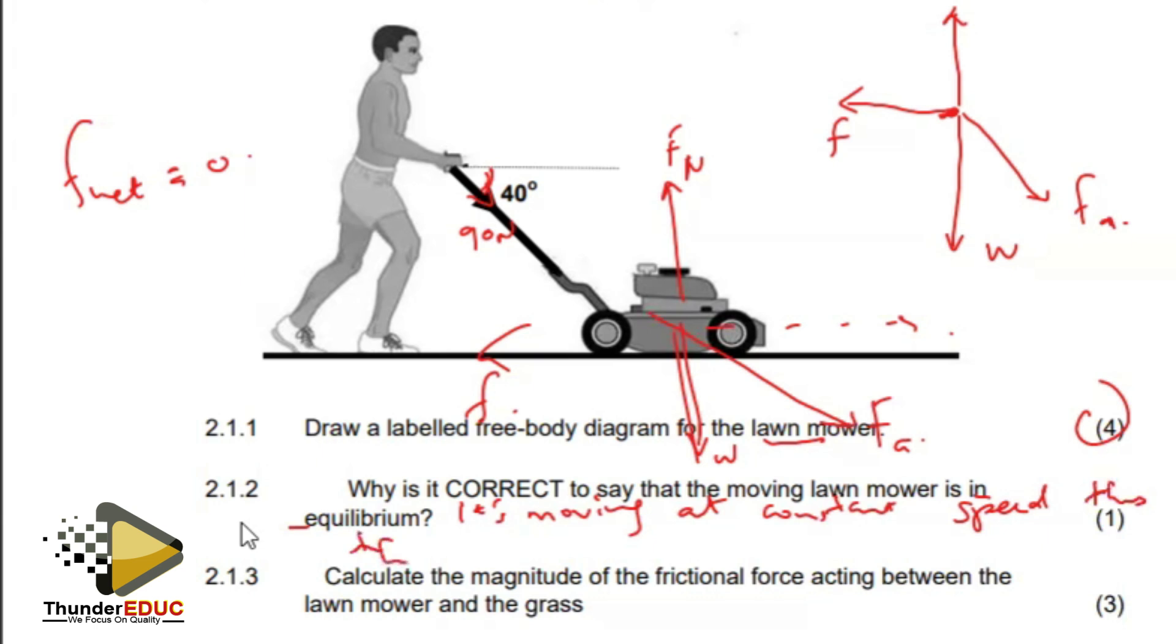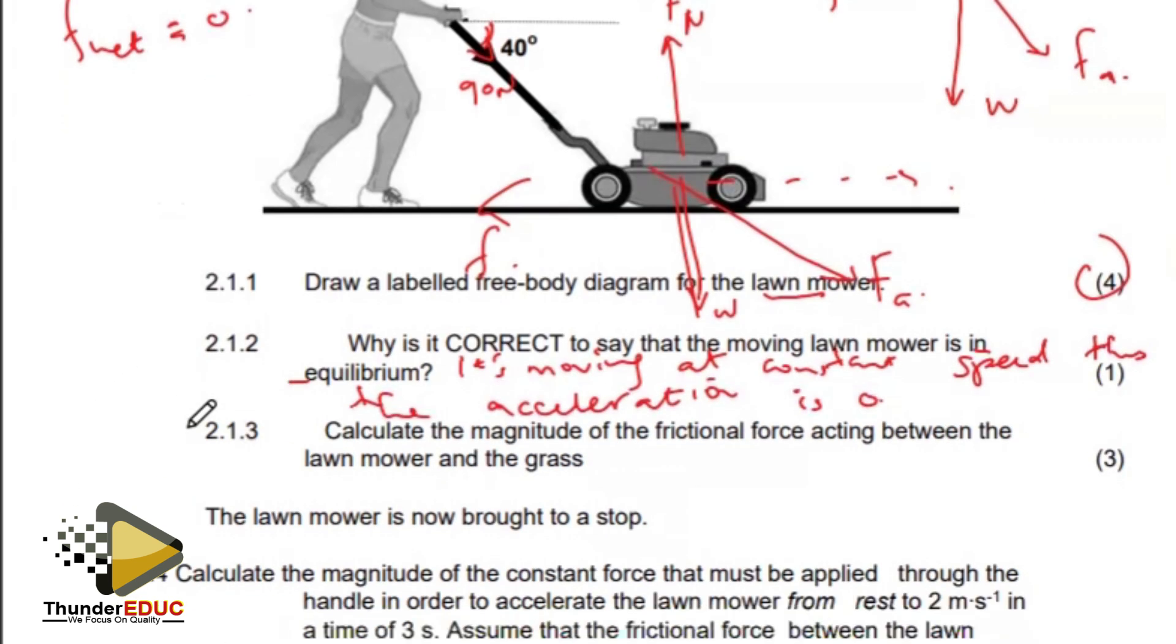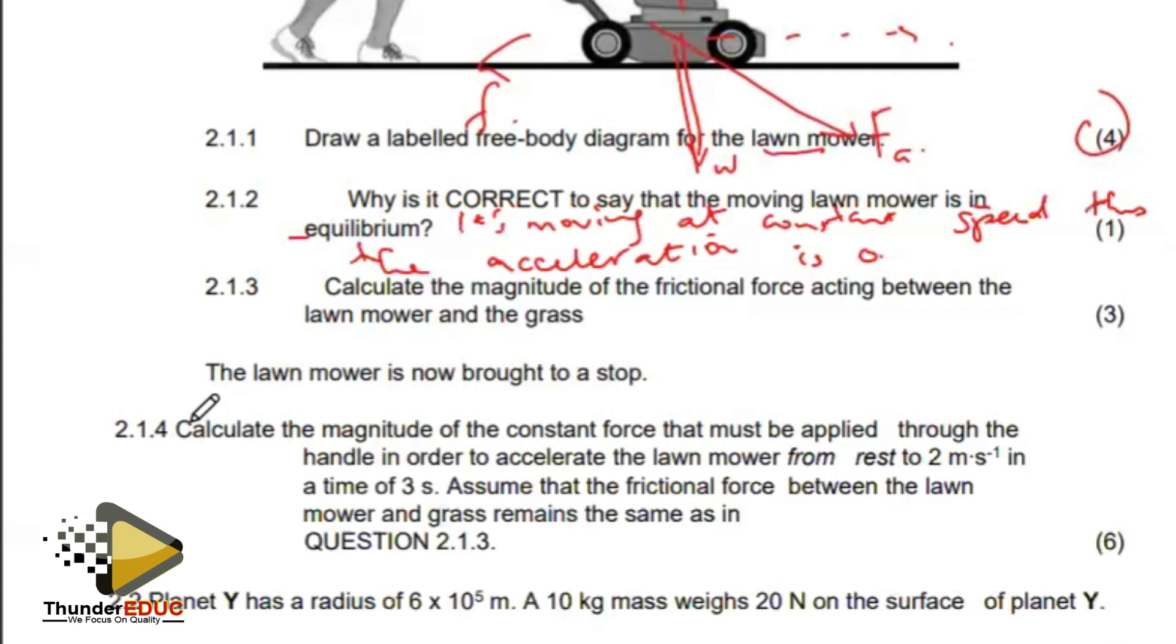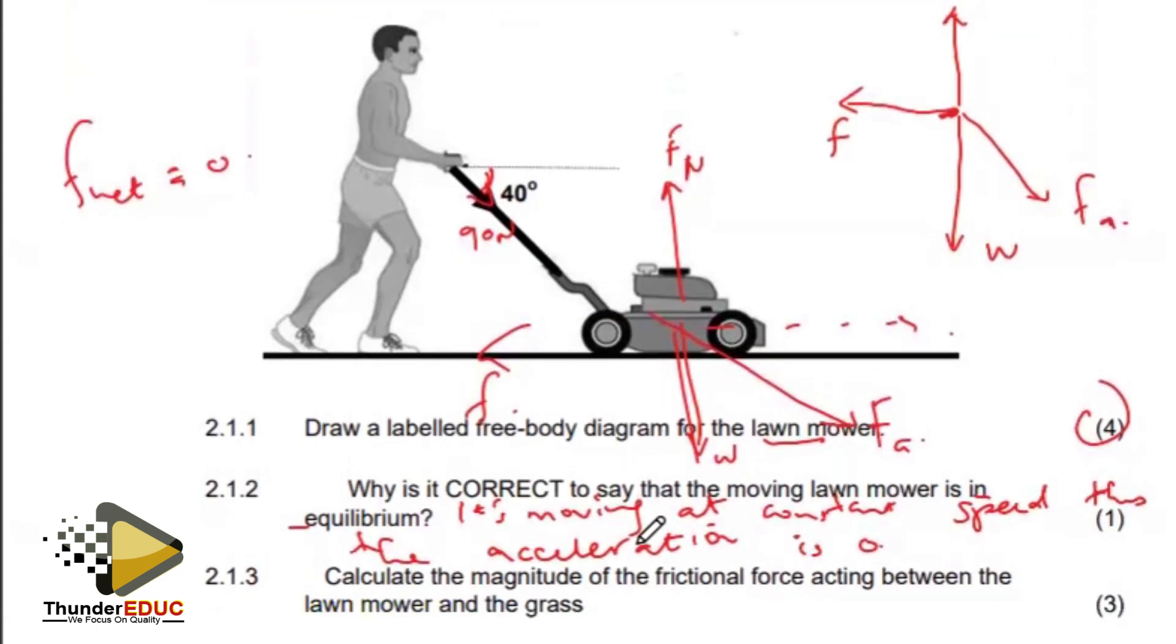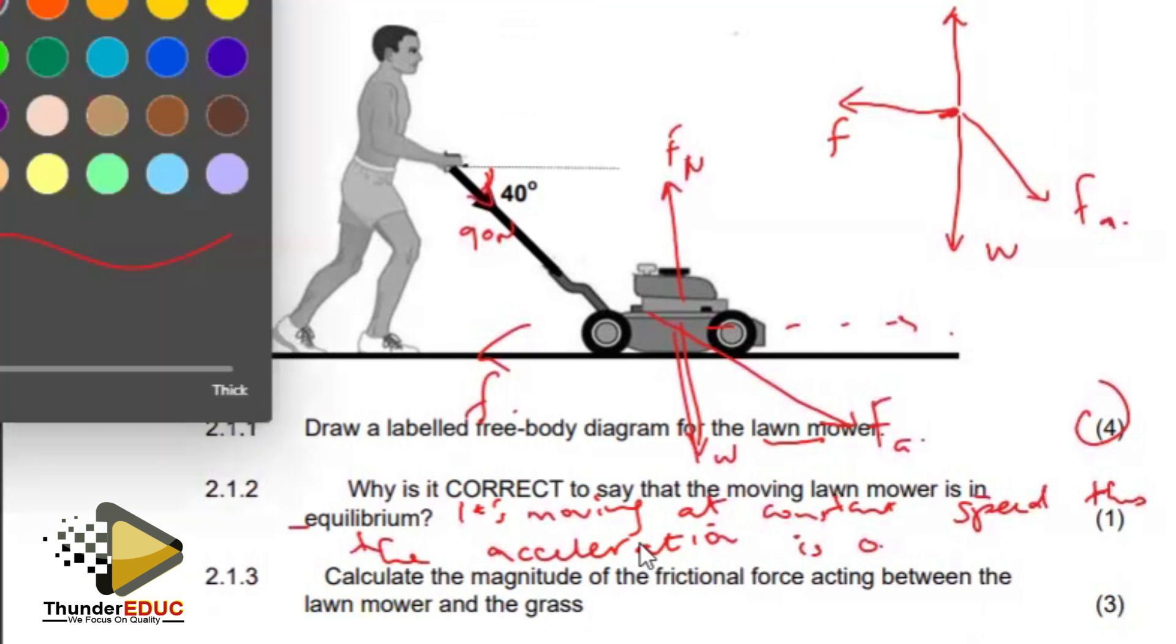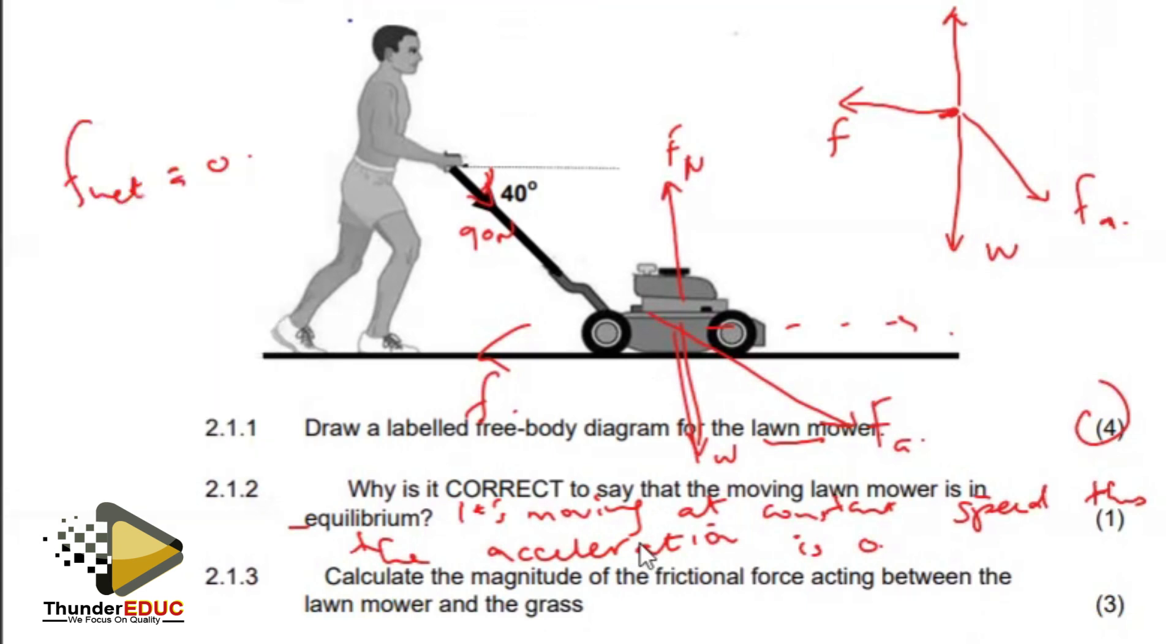The acceleration is zero. They want us to calculate the magnitude of the frictional force acting between the lawnmower and the grass. Since we already know that it's moving at a constant speed, let me just try to break this down. If this is 40 degrees with the horizontal, which means this is also 40.